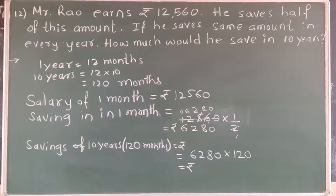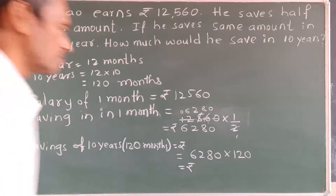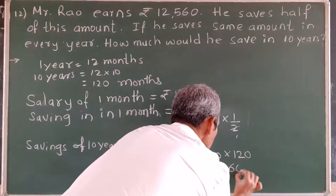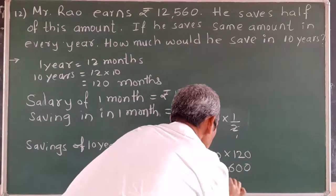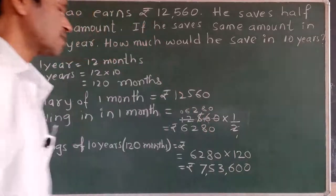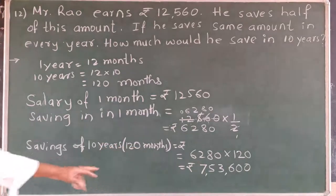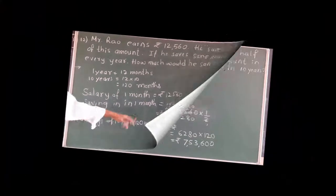Therefore, 6,280 multiplied by 120 gives us 7,53,600. He saves rupees 7,53,600 in 10 years or 120 months.